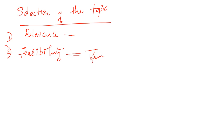The next aspect is broadness. Depending upon the purpose of the research project, the broadness of the topic is decided. For instance, 'online advertising' is way too broad a topic for research. Depending on whether it is a minor or major project, the topic is crystallized and decided.